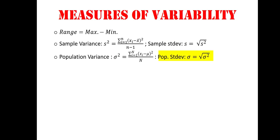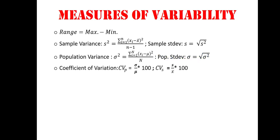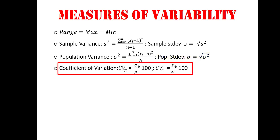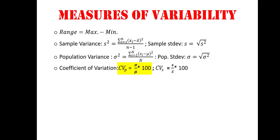population variance. Then we have the coefficient of variation. For the population, we compute the coefficient of variation by taking the population standard deviation divided by the population mean, and we multiply by 100 to write it as a percentage.